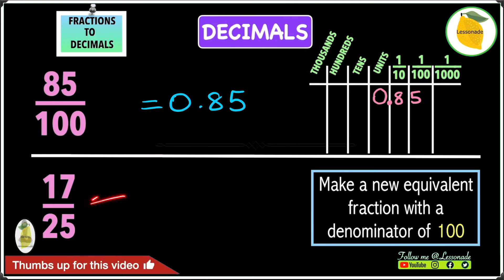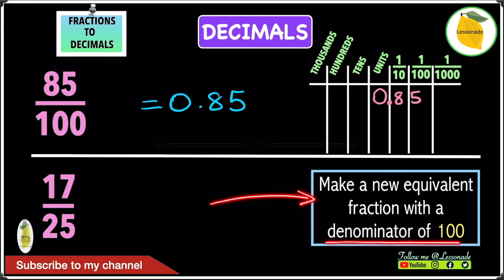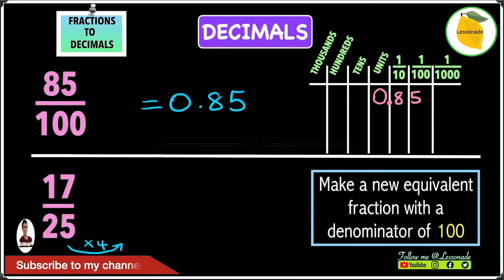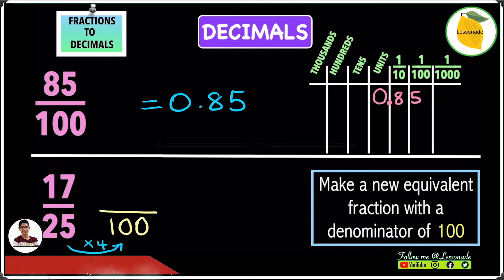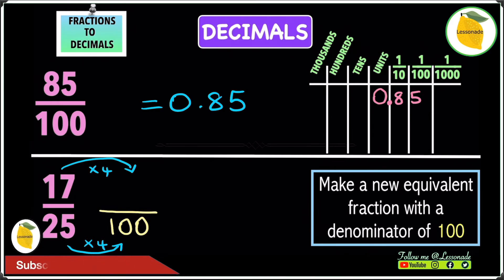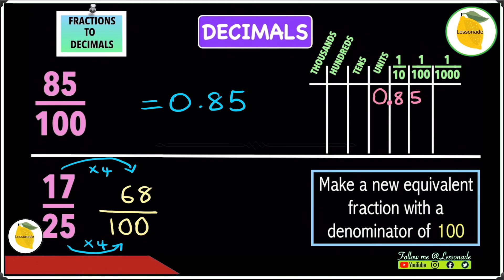Now let's move on to 17 over 25. We have to make a new equivalent fraction with a denominator of 100. To change 25 into 100 we multiply by 4, because 25 times 4 gives you 100. Whatever you do to the denominator, you do to the numerator — so we multiply 17 by 4. Since 17 times 4 is 68, we get 68 over 100, which equals 0.68.